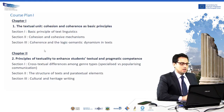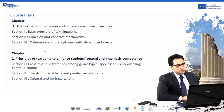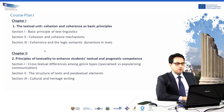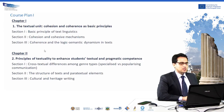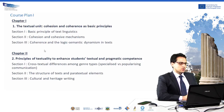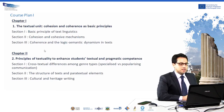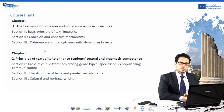The second chapter has to do with the principles of textuality. The aim of this chapter is to equip students with instruments for textual and pragmatic analysis. In particular, in the first section, we will see cross-textual differences among general types — specialized versus popularizing communication. In section two, we will see some underpinning of text structures and paratextual elements. In the last section, we will speak about cultural and heritage writing.